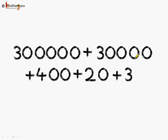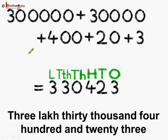Counting the place values: ones, tens, hundreds, thousands, ten-thousands. So this is 30,000 plus 400 plus 20 plus 3. Let's bring the digits to their correct places. There are 3 ones, so 3 goes to the ones place.